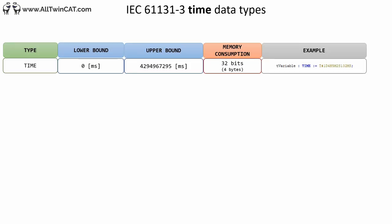Next we have data types for declaring dates and times — these are very useful and quite easy to use. First we have TIME, where you can specify a time duration. It's a 4-byte value with a resolution of 1 millisecond. When setting a value to a TIME variable you can specify the time using days, hours, minutes, seconds, and milliseconds. Note that you have to use the characters T# when assigning a time value. You will use the TIME data type a lot in your PLC software development career.